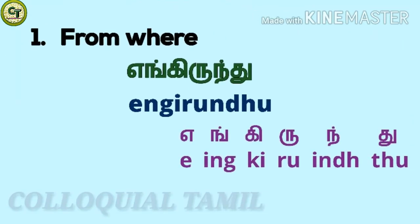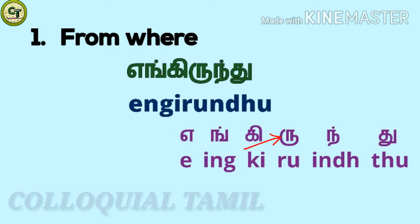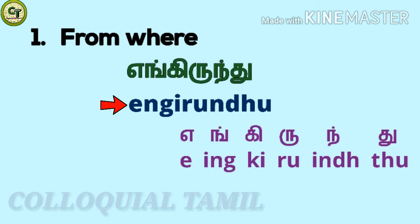'From where' in Tamil is 'yengi rindu'. Breaking it down: 'a' a short vowel, 'ing' a consonant, 'k' a short letter, 'ru' a short letter, 'ind' a consonant, 'to' a short letter. Together: yengi rindu.